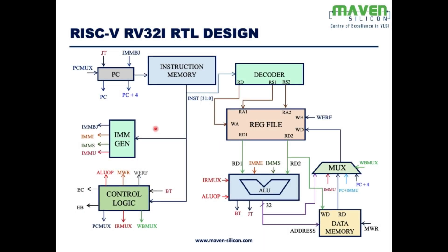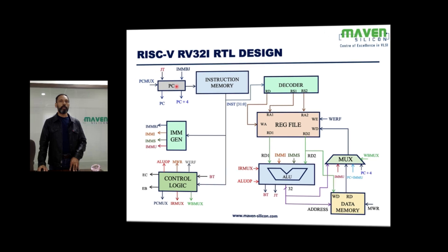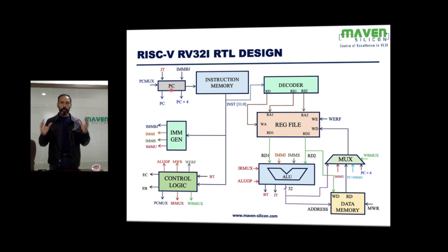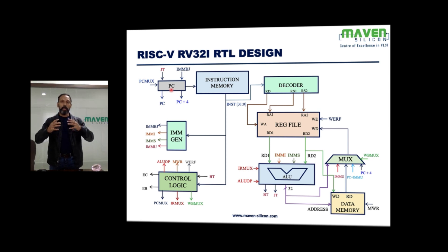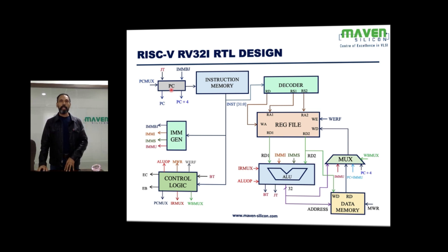We are going to have major modules like the PC module. The PC module is going to have the PC mux inside. We don't want too many small modules, because if we have too many small modules there could be many signals, making the circuit very complex. So to realize register transfer level, we need to consolidate the circuit.